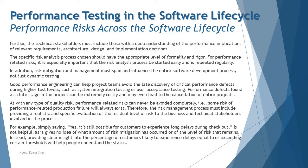For example, simply saying it is possible for a customer to experience long delays during checkout is not helpful, as it gives no idea of how much risk mitigation has occurred or the level of risk that remains. Instead, providing clear insights into the percentage of customers likely to experience delays equal to or exceeding certain thresholds is more useful. You need to be precise — for instance, stating that beyond 500 concurrent users people may experience issues, or that heavy load occurs at a particular time of day — so the client is fully prepared to handle such scenarios in real time.